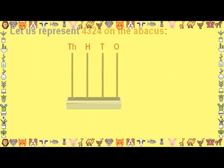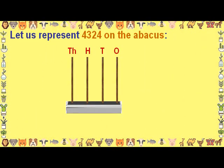Let us represent 4324 on the Abacus. We put 4 beads of a thousand value each in the rod showing 1000s place value, and 3 beads of 100 value each in the rod showing 100s place value.